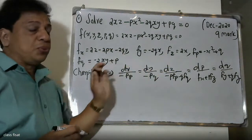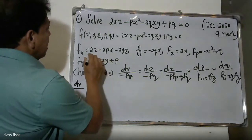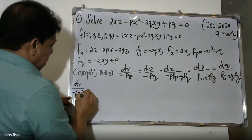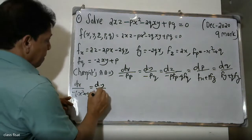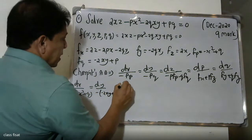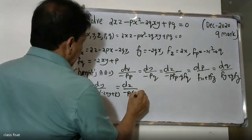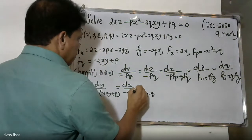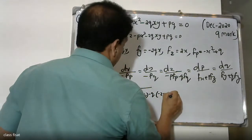Now substituting the values, the probability cos derivative: dx divided by fp equals dx divided by minus 2bx plus q, dy divided by minus fq divided by minus 2xy plus p. Then dz divided by minus p into fp — that is minus 2bx plus q — minus q into fq, where fq equals minus 2xy plus p.